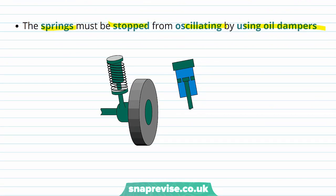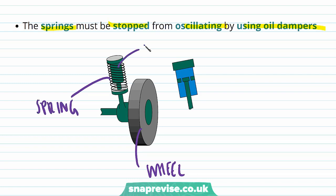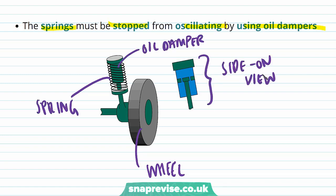Here's a diagram showing the wheel of a car and a suspension spring with an oil damper. If we take a side-on view of the damper, we can see that the piston is damped in oil, and this stops the spring from oscillating.